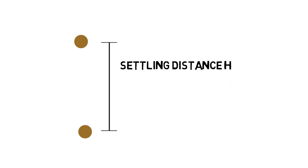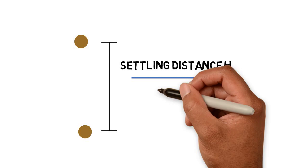If the particles settle down, we can define settling distance h divided by time t equals settling velocity Vs of the particle.